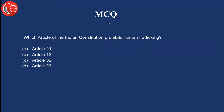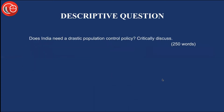Let's see the multiple choice question from yesterday's discussion. Which article of the Indian Constitution prohibits human trafficking? Your options are: Article 21, Article 12, Article 32, or Article 23. You can put your answer in the comment section below.